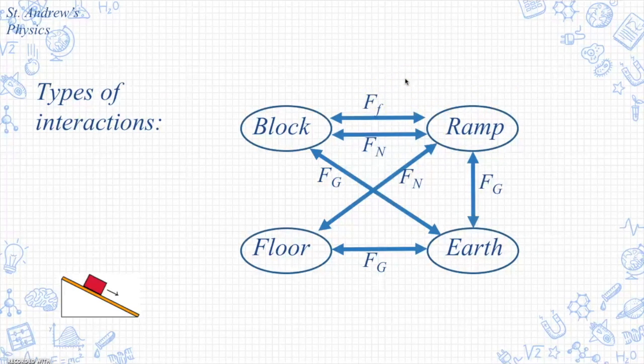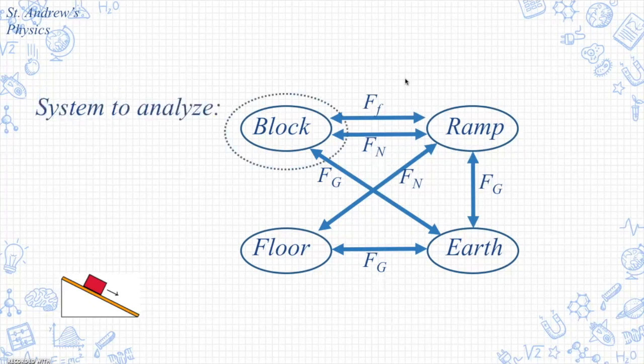The next step is to isolate or indicate the object or objects we wish to analyze. In this case we're going to analyze the block. We draw a dotted line around the block to indicate that is the system boundary, and we notice that there's a friction force, a normal force, and a gravitational force crossing over that boundary line. Therefore there are three interactions acting on that block.